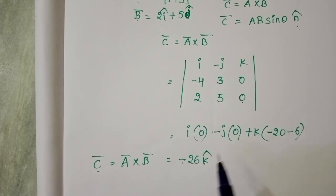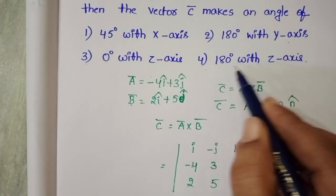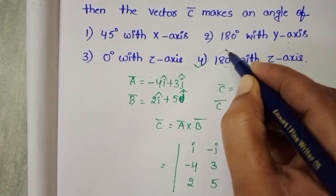This vector is along the negative z direction. So with the positive z direction it makes an angle of 180 degrees. The 4th option, 180 degrees with z-axis, is correct.